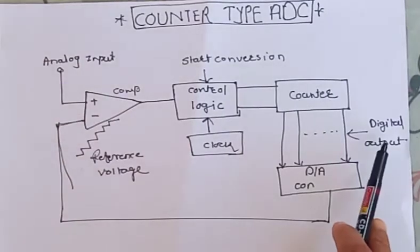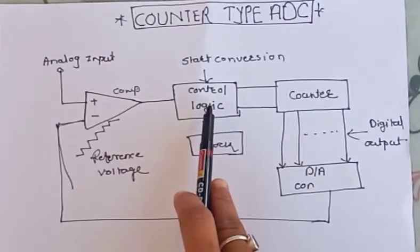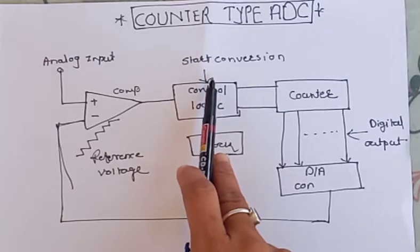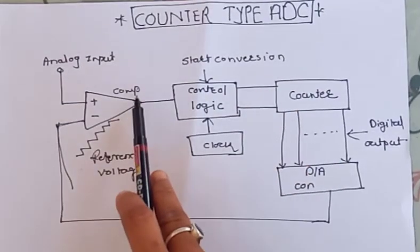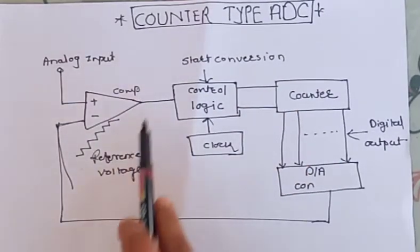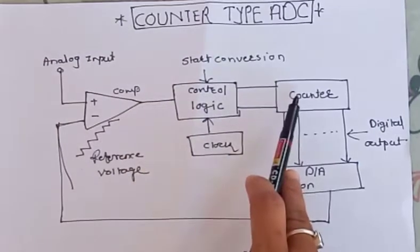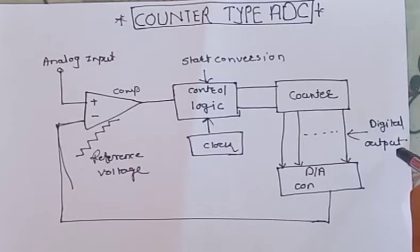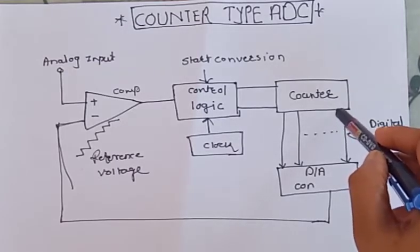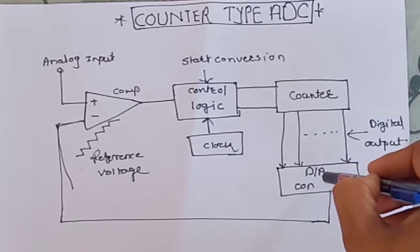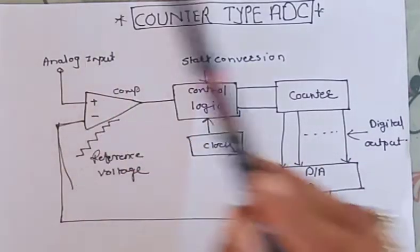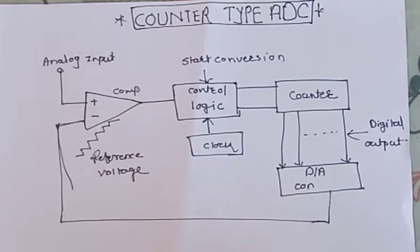Whenever you want to start the conversion of analog voltage into digital form, a clock must be applied and the start of conversion signal must be high. When both are applied to the counter, the counter stores this voltage and provides the digital output. The output of the counter is also converted into analog form and applied to the negative terminal of the comparator.